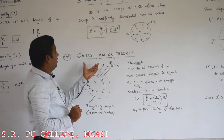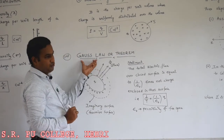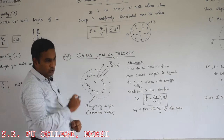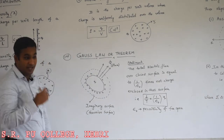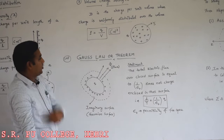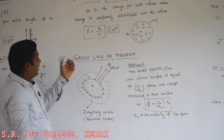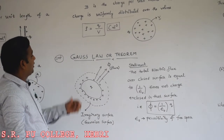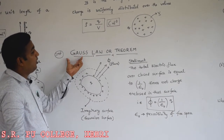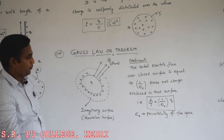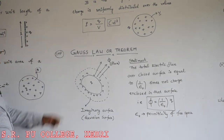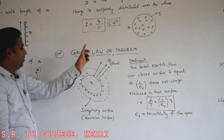By using these three continuous charge distribution concepts, we can learn one of the important concepts called Gauss law or theorem, which is mainly for electrostatics. This Gauss law or theorem is also applicable for magnetism, which we will discuss in a coming chapter. In case of electrostatics, we call it Gauss law or theorem for electrostatics.